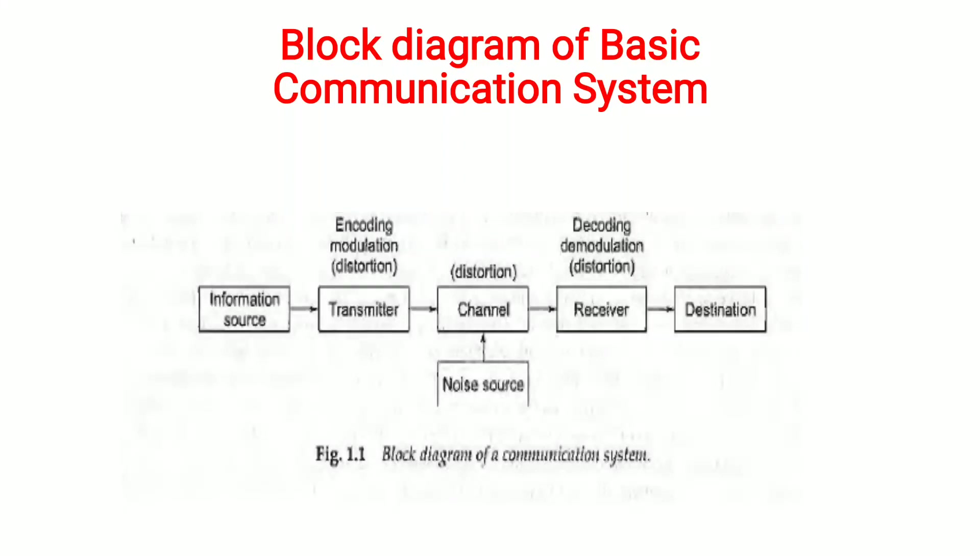What is communication? Communication is an exchange of information, ideas, and feelings from one place to another, or one person to another, or one group to another, either verbally or non-verbally using a medium. In electronics, common ways used for communication are radio, TV, internet, electronic mail, messaging, and Facebook. These systems are called communication systems.